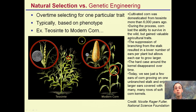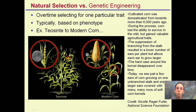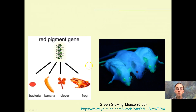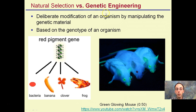This was through cultivation and being more efficient at food production that modern corn was essentially developed. We've then gone to the next step and genetically engineered it — the corn we're genetically modifying is the result of many, many generations of natural selection. Specifically, genetic engineering is a deliberate modification of an organism by manipulating the genetic material based on the genotype of an organism.